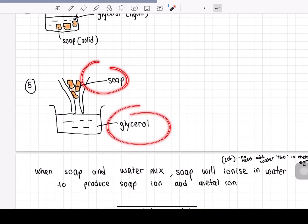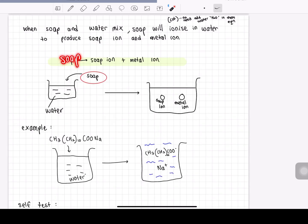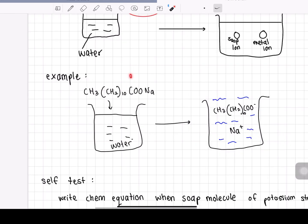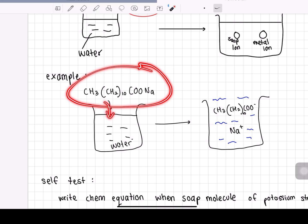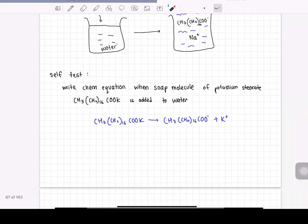There you have it — your soap and your glycerol, all separated. Once you form your soap and mix it with water, the soap will ionize in water to produce soap ion and metal ion. For example, if we have a structure here with 12 carbons and sodium, remember how to name the soap: the metal is sodium, and since there are 12 carbons, this is sodium laurate. When added into water, this soap will ionize to produce metal ion and soap ion.